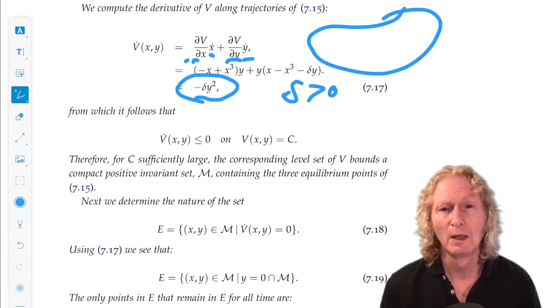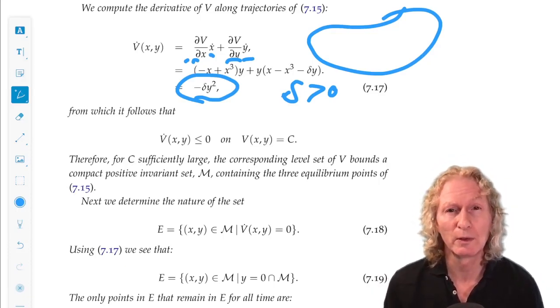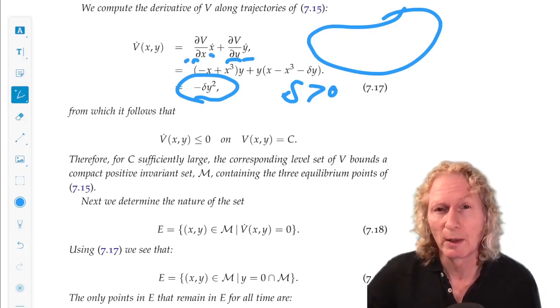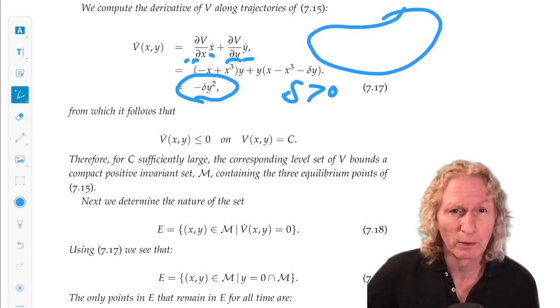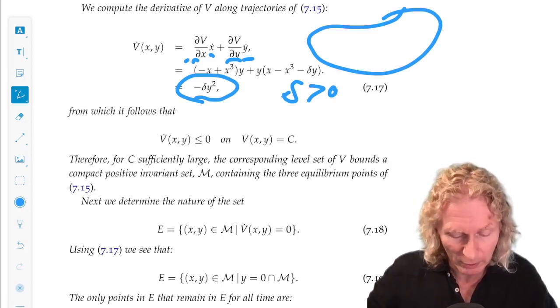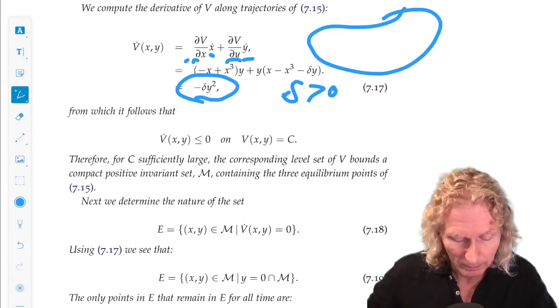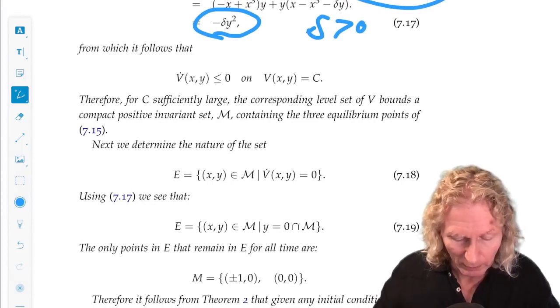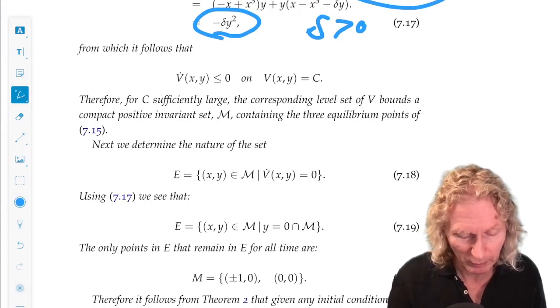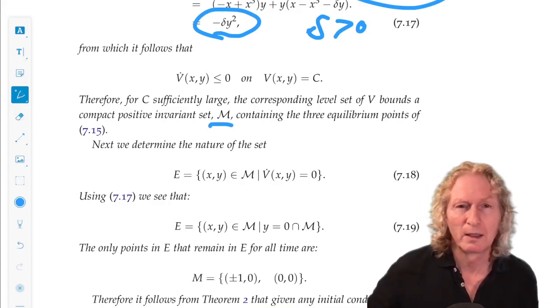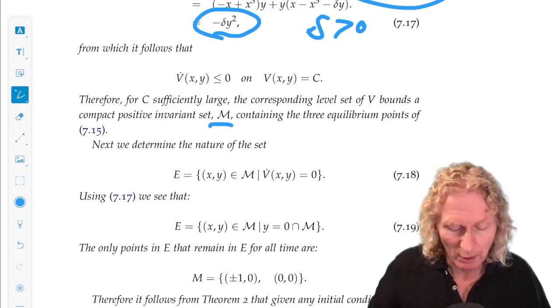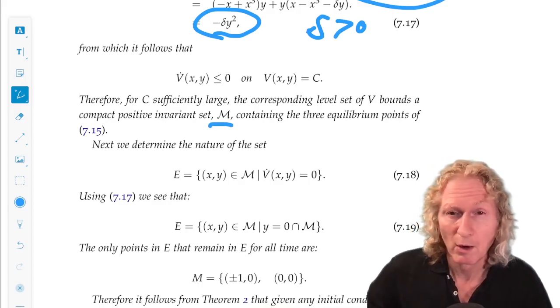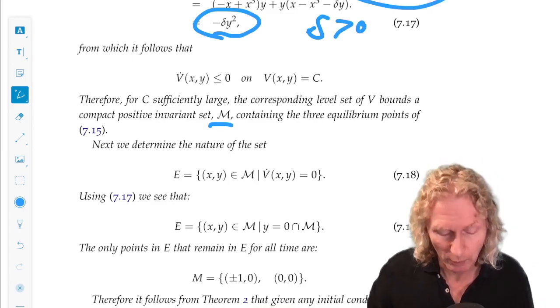V̇ is less than or equal to zero on a large level set. So that defines a positive invariant set. V̇ is decreasing. Less than or equal to zero means if you start on the boundary, you either leave the boundary or you stay on that boundary for where it vanishes, where V̇ vanishes. That gives us our positive invariant set M. All trajectories are bounded if we start in this big region.